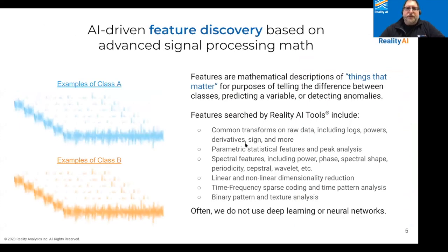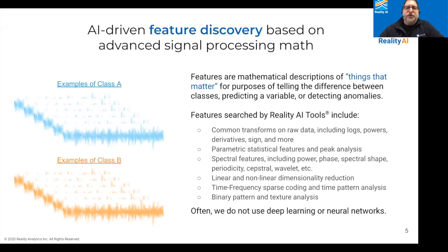The other thing that's important to understand about what we do is that we are really about automated feature discovery. We begin by using advanced signal processing math to really try and get to the bottom of what really matters for telling the difference between different classes. We basically throw everything in the signal processing textbook at the problem to maximize the separation between classes or correlation to a target variable, and only then generate a machine learning model that makes use of those features. Our tools don't usually point to deep learning or neural networks — they can incorporate them, but most of the time there are more computationally efficient ways of doing things.